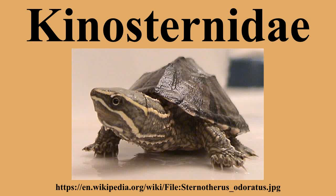Kinosternids can be black, brown, green, or yellowish in color. Most species do not have shell markings, but some species have radiating black markings on each carapace scute. Some species have distinctive yellow striping along the sides of the head and neck.